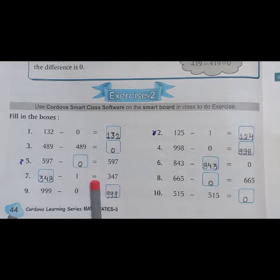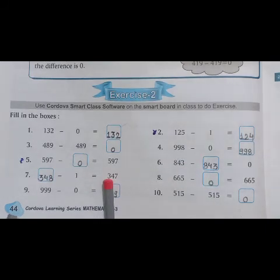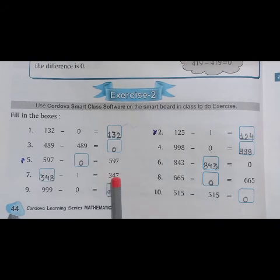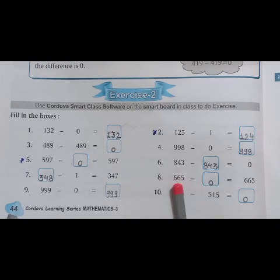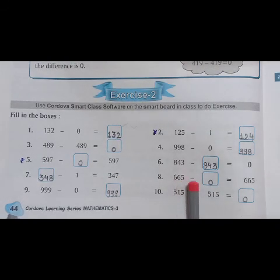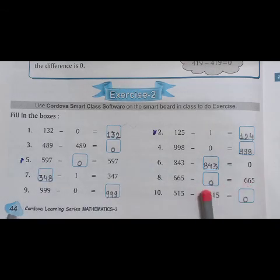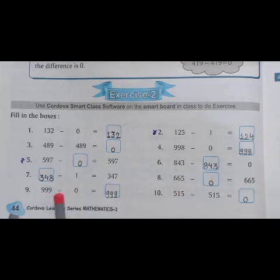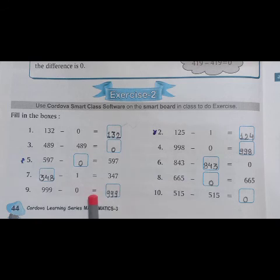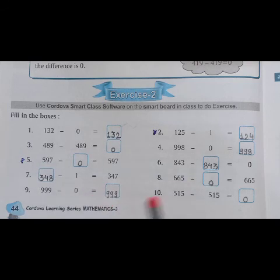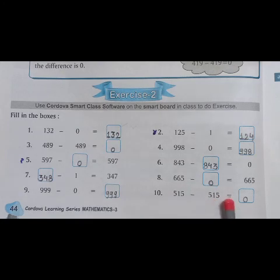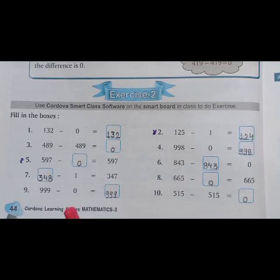Dash minus 1 equals to 347, so 348. 665 minus dash equals to 665, so 0. 999 minus 0 equals to 999. And last one is 515 minus 515 equals to 0. Now write all these questions of exercise number 2 in your maths fair copy. Have a good day.